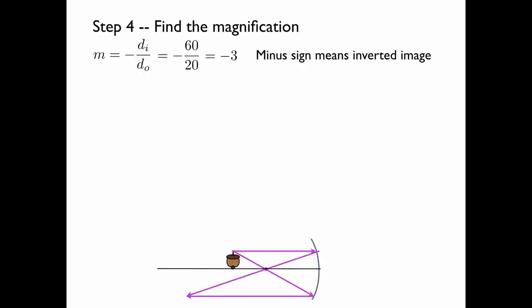The minus sign means that the image is inverted. Now we'll find the image size. We simply multiply the height of the original object by the magnification. This gives negative 9 centimeters.